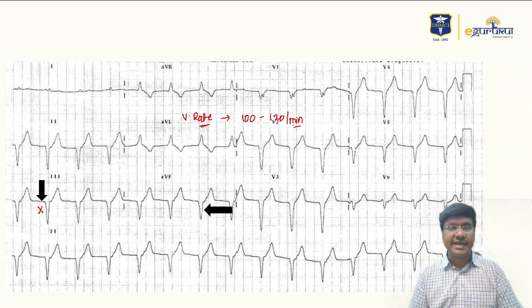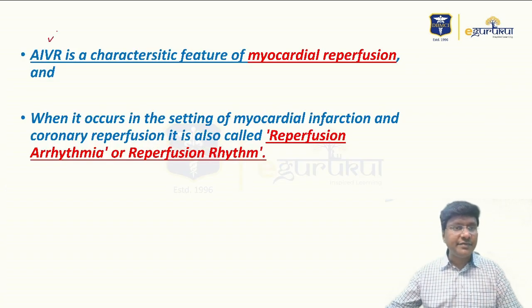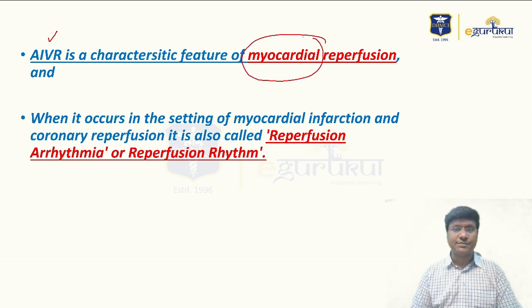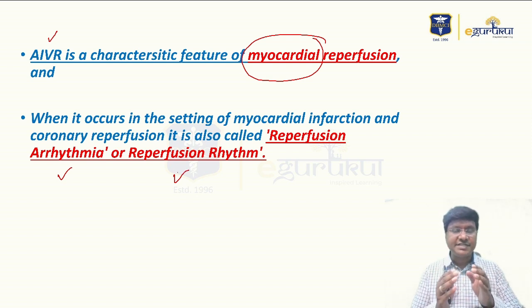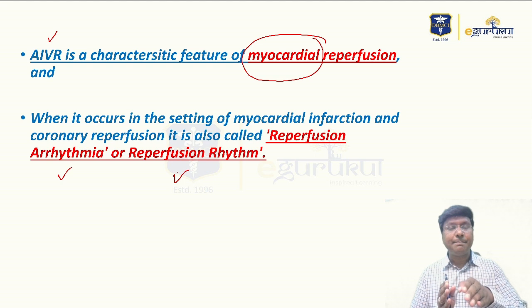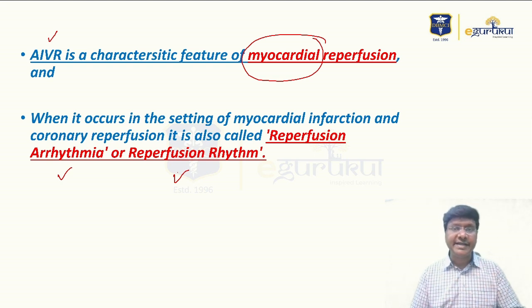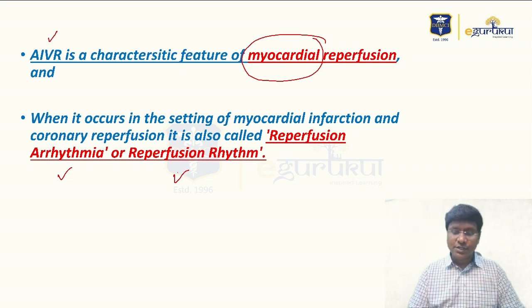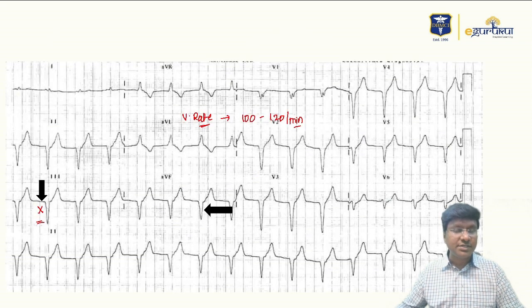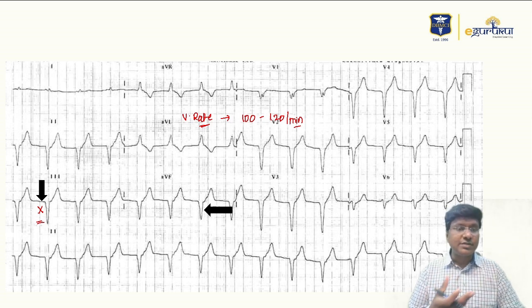AIVR occurs as a characteristic feature of myocardial reperfusion. We call it a reperfusion arrhythmia or reperfusion rhythm. When the blocked vessel opens, perfusion is regained to the dead myocardium, which then starts throwing abnormal impulses, producing AIVR. There is no P wave because the impulse originates from the ventricle, not the SA node.